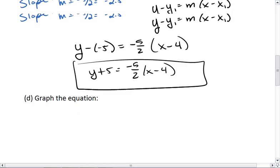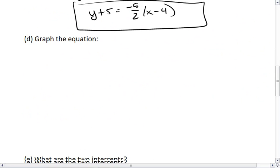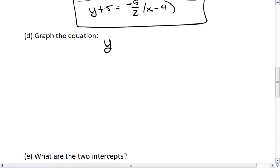To graph the equation, I prefer to use slope-intercept form. I'm going to write the equation up here in slope-intercept form. We have y equals negative 5 halves, and I prefer using a fraction, x plus 5.